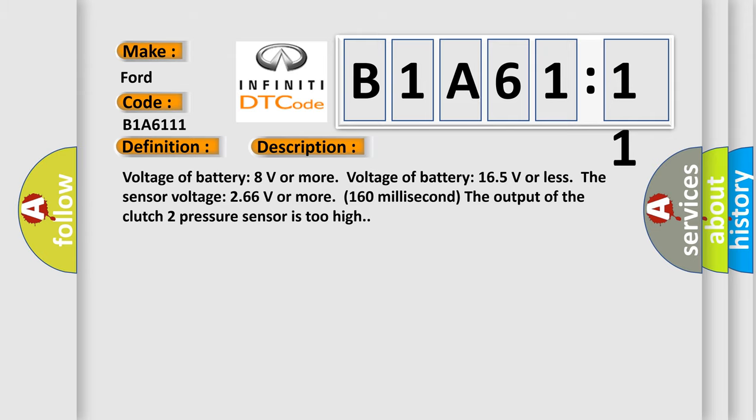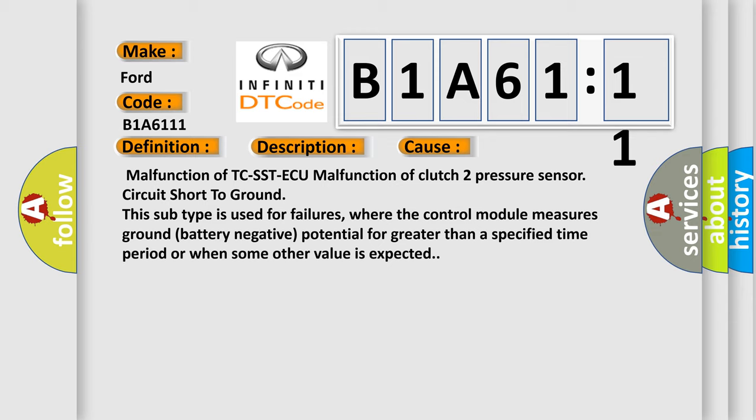This diagnostic error occurs most often in these cases: malfunction of TCS-ST ECU, malfunction of clutch 2 pressure sensor, circuit short to ground. This subtype is used for failures where the control module measures ground battery negative potential for greater than a specified time period or when some other value is expected.